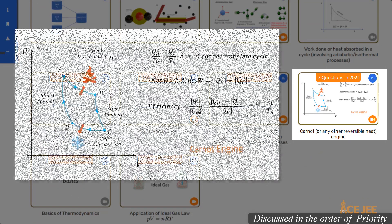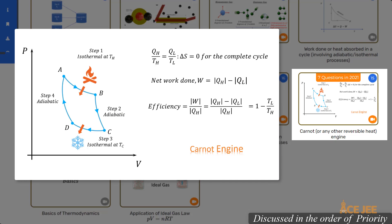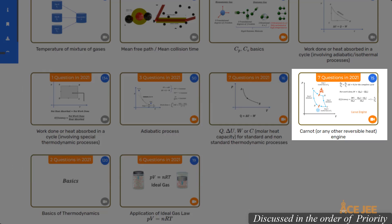In the next important question type in heat and thermodynamics, you will be asked to determine efficiency in a Carnot heat engine. Remember that in the Carnot engine cycle, heat is absorbed and released during isothermal processes, and the other two processes are adiabatic, where no heat is absorbed. We use the first law of thermodynamics for the complete cycle to relate net work done to net heat absorbed, and we use the fact that change in entropy is 0 for the complete cycle, giving us QH/QL = TH/TL. Using these two, efficiency — defined as net work done divided by heat absorbed QH — is 1 minus TL by TH.